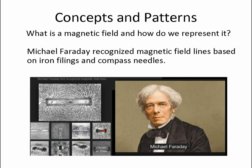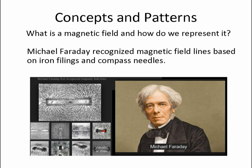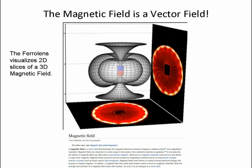What's a magnetic field and how do we represent it? Historically, Michael Faraday recognized the magnetic field line based on his observations of iron filings and compass needles. But we know a magnetic field is in 3D vector space. What the ferrolens does is it basically takes a slice of that 3D vector space. It can come at any angle and you will get ISO lines showing us that field.